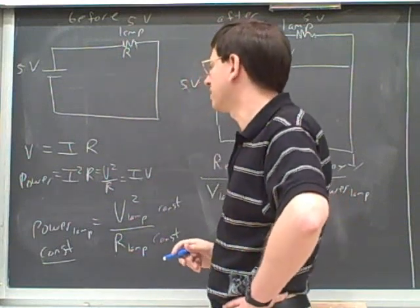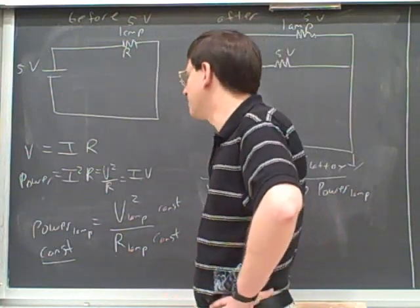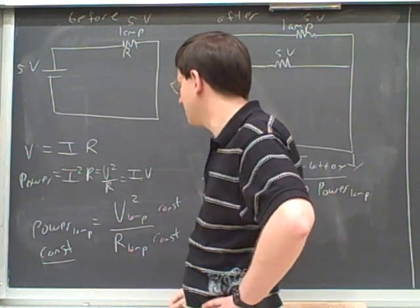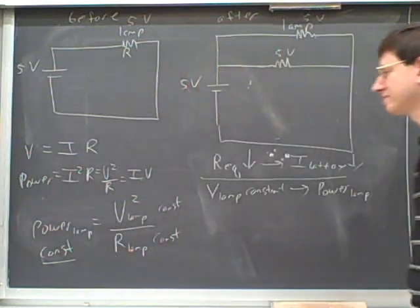So in normal wiring, everything is in parallel and nothing is in series because you don't want things to affect each other. If we keep in mind that common sense, then we shouldn't be that surprised to see that the power is constant here when we add something new in parallel.